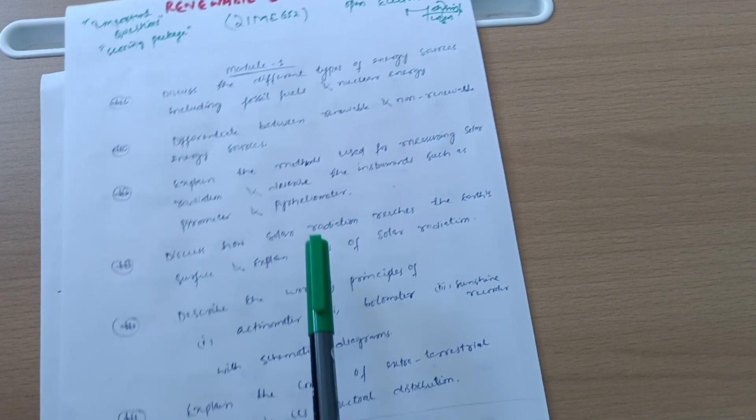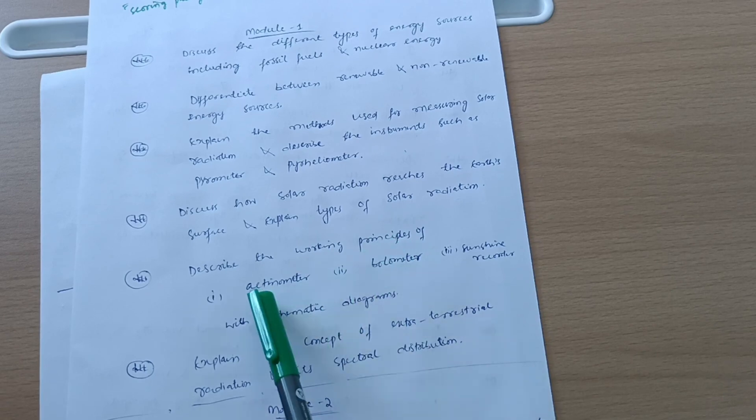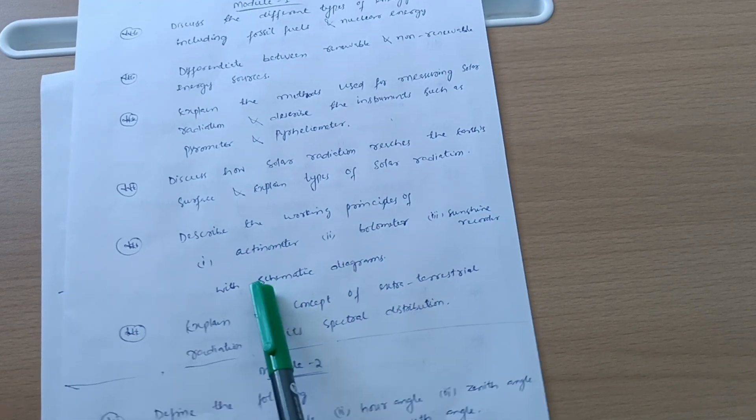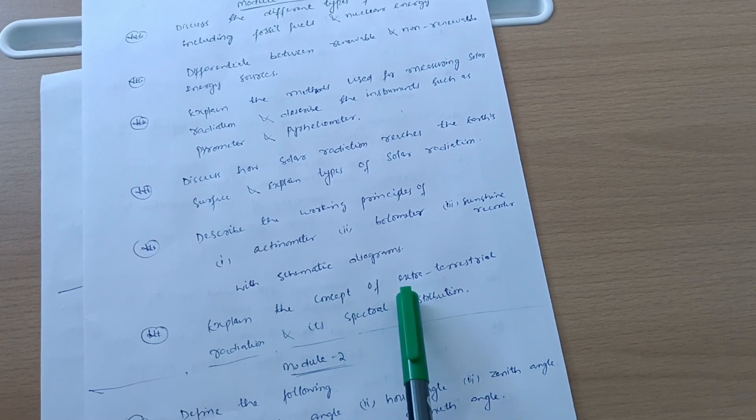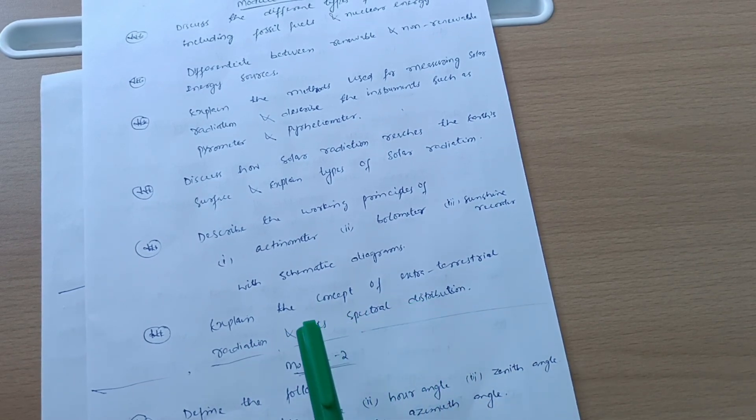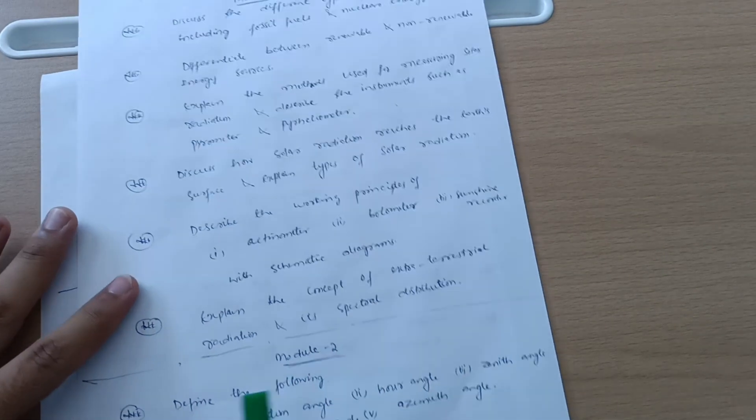Discuss how solar radiation reaches the earth's surface and explain types of solar radiation. Describe the working principles of actinometer, bolometer, and sunshine recorder with schematic diagrams. Explain the concept of extraterrestrial radiation and its spectral distribution. This is all about Model First, so go through these important questions.